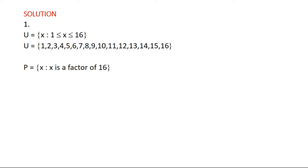P is given by the set such that X is a factor of 16, so the members in set P are the factors of 16. The factors of 16 are 1, 2, 4, 8 and 16. Remember that P is a subset of the universal set U, so all members in P must be in U. We can check: 1 is in U, 2 is in U, 4 is in U, 8 is in U and 16 is also in U — so it satisfies that condition. Factors of a number are numbers that can divide that number without a remainder.